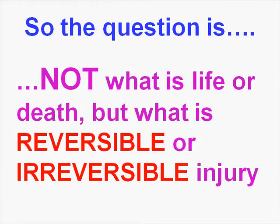The discussion of what exactly life and death is on a cellular level can be just as complex and profound as it is on the human level. What we want to do is determine what changes that can happen in a cell, tissue, or organ which would result in irreversible changes to that area — that's called death. If it's reversible, it's simply called injury.